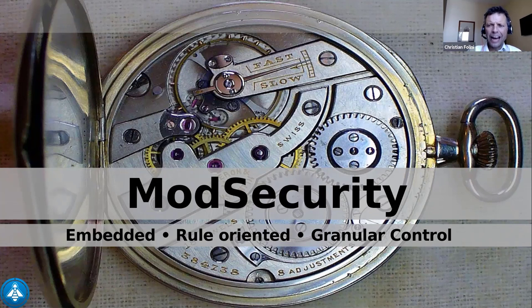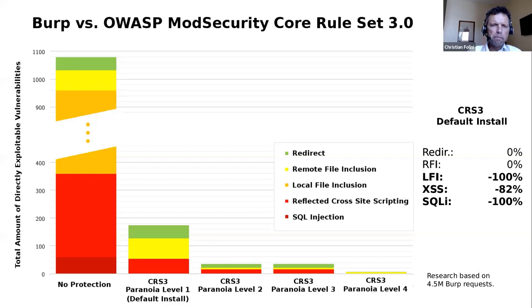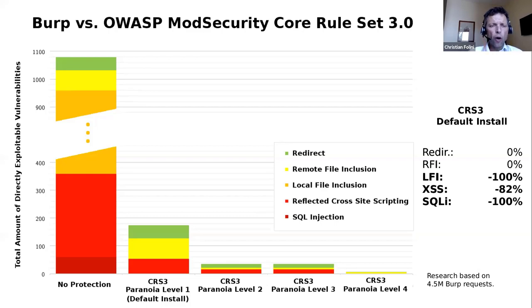Does it really work? Here you see Burp attacking a vulnerable application — an application that is vulnerable on purpose, deployed to test whether a security scanner like Burp is able to exploit it and discover all the weaknesses. Burp executed over four million requests against this vulnerable application, and with roughly a thousand of those requests Burp reported finding a weakness it believed was exploitable.